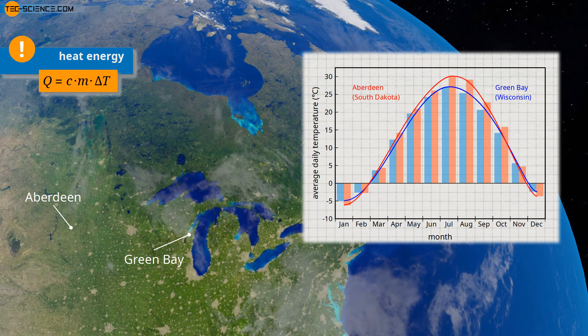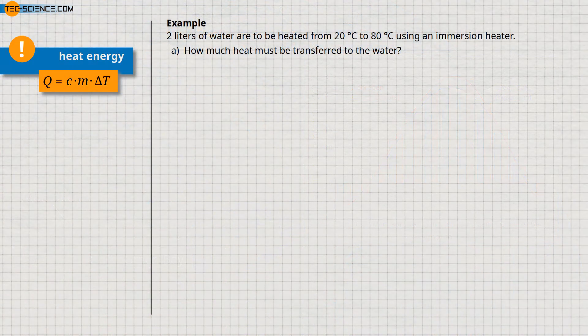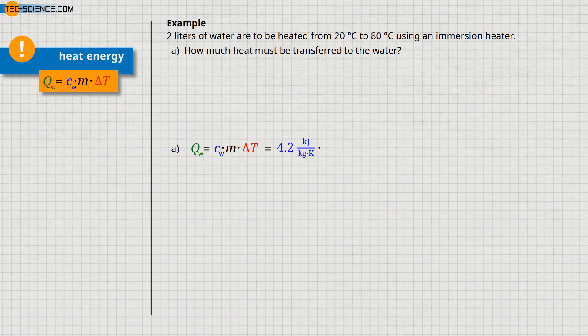At this point, a small example for the use of the derived formula. Two liters of water are to be heated from 20 to 80 degrees Celsius with an immersion heater. The question is how much heat has to be absorbed by the water. To do this, we first need the specific heat capacity of water, which in this case is 4.2 kilojoules per kilogram and kelvin. We obtain the mass of water to be heated from the volume of 2 liters, which corresponds to a mass of 2 kilograms.